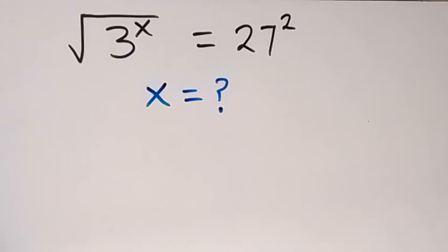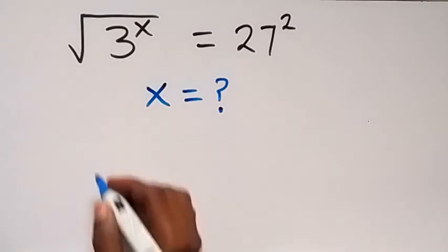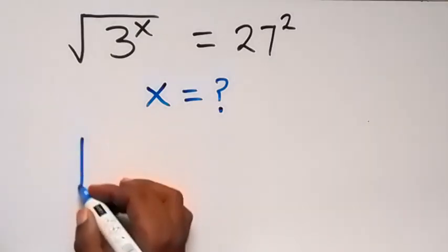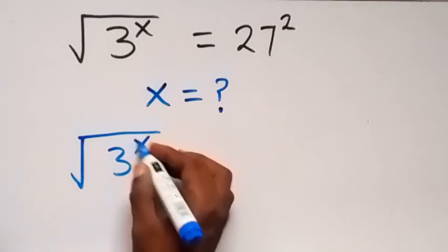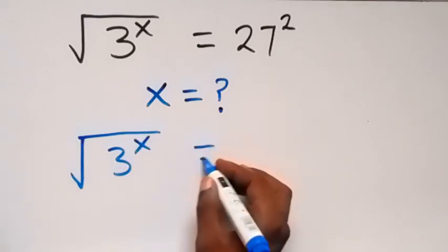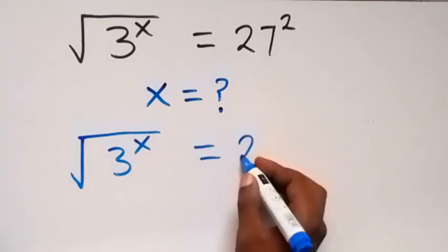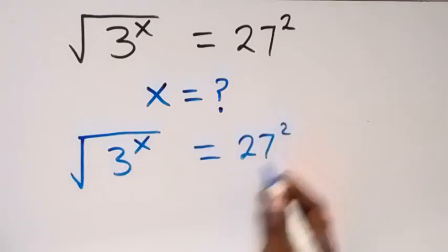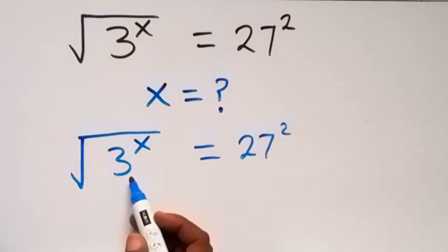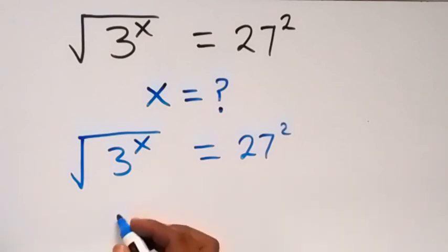Hello, you are welcome. How to find the value of x in this nice algebra problem. From here we are given: square root of 3 raised to power x equals to 27 squared.